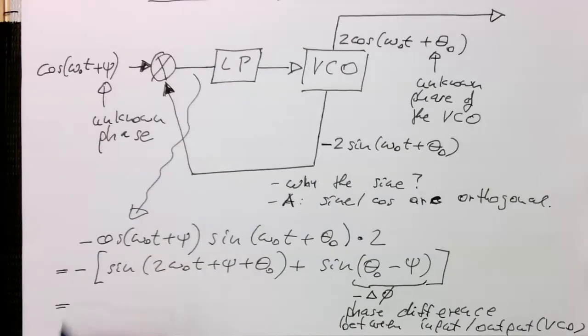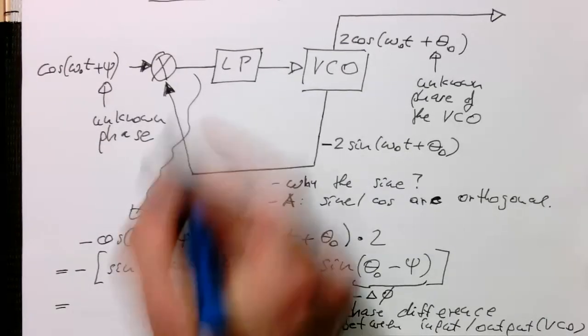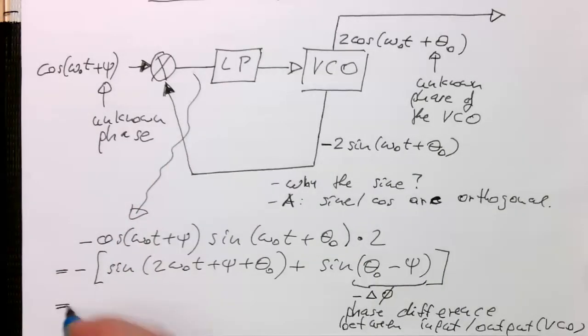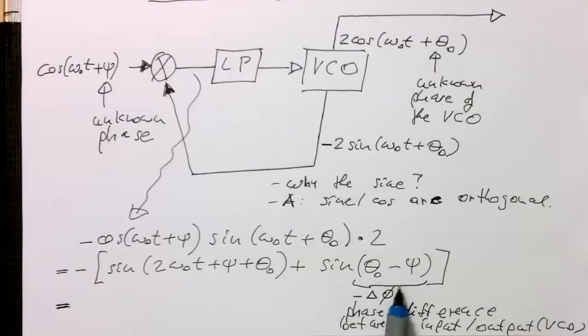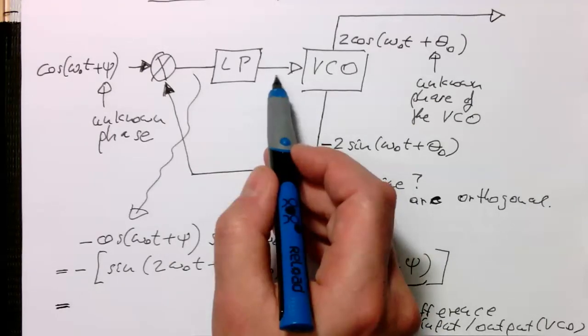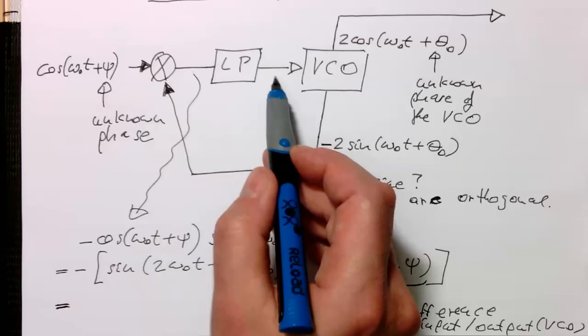And so if you're looking at this here, so then we can summarize this here so that at this point here we have here in a two time omega zero frequency term here and just the phase difference.